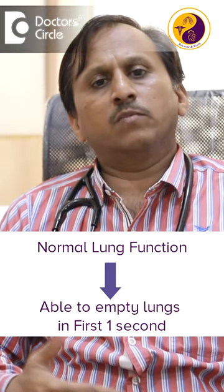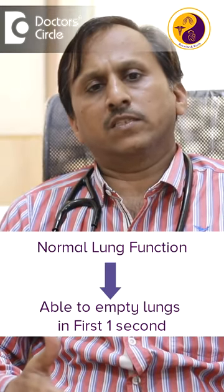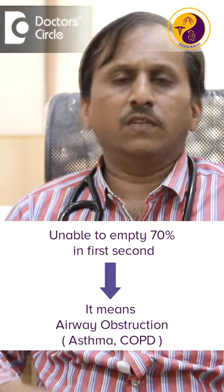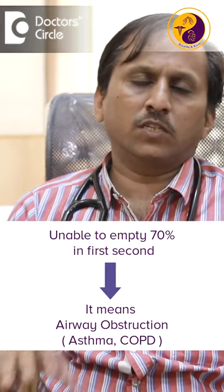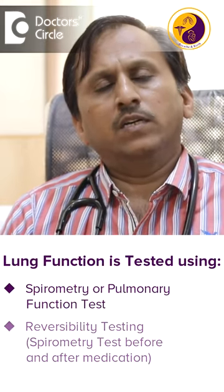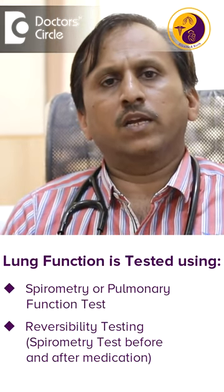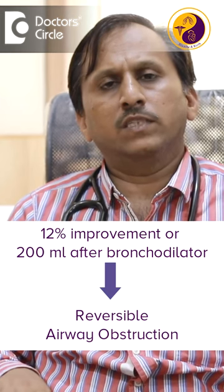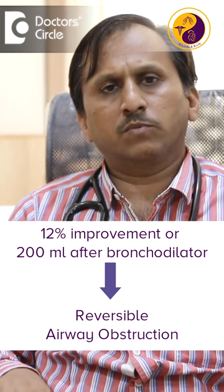In the first second, if they are able to empty the lungs sufficiently, it is considered normal and compared to established standards. If they cannot get out at least 70% in the first second, we say that indicates obstruction — such as asthma or COPD. We then do reversibility testing by giving a bronchodilator; if there is 10% improvement or 200ml increase, it is considered reversible airway obstruction.